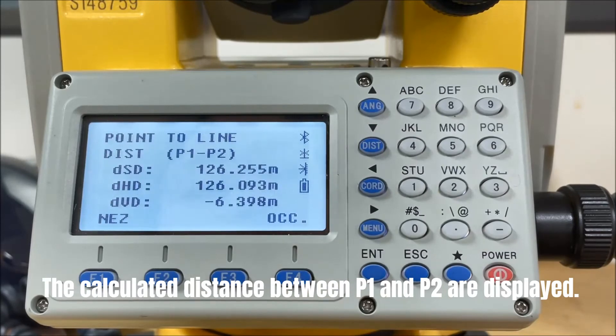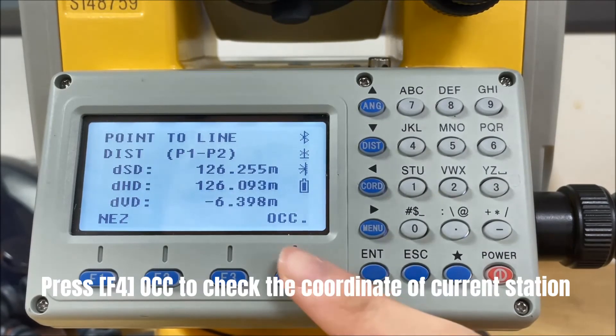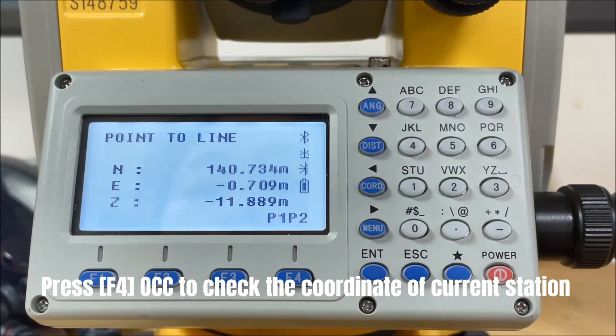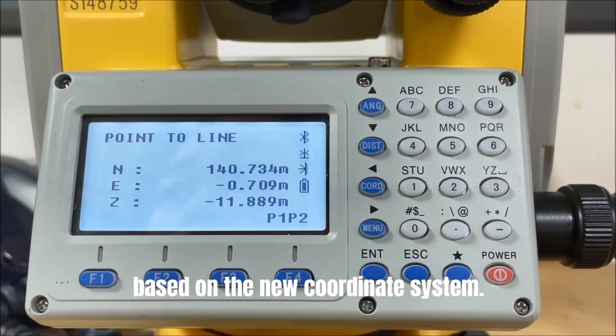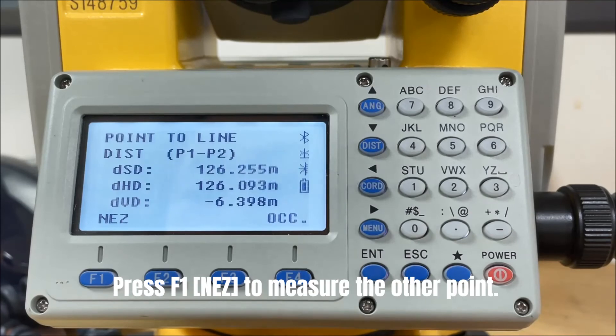The calculated distance between P1 and P2 are displayed. Press F4 Occupied Point to check the coordinate of current station based on the new coordinate system.